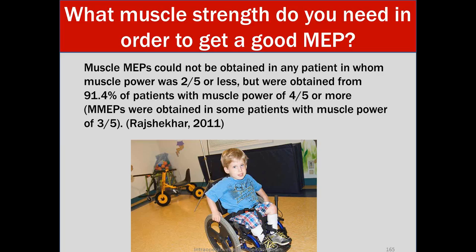What muscle strength do you need in order to get a good response? Muscle MEPs could not be obtained in any patient in whom muscle power was two out of five or less but were obtained from 91.4% of patients with a muscle power of four or five or more. Muscle MEPs were obtained in some patients with a muscle power of three out of five. So this is where your intake history and speaking to your surgeon is going to make sense and correlate with your recordings.